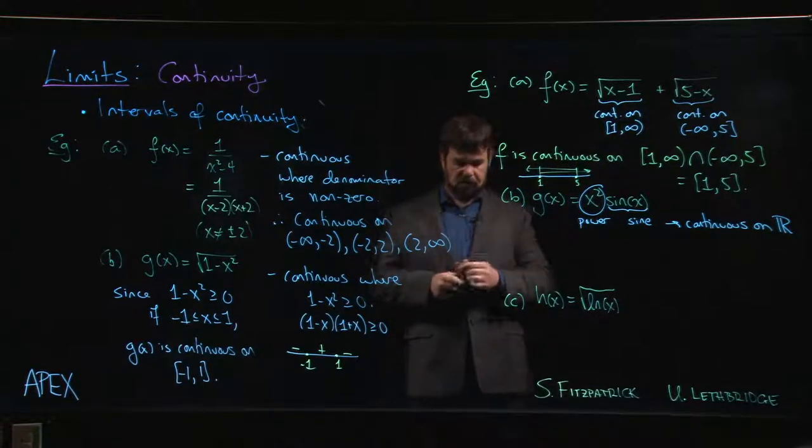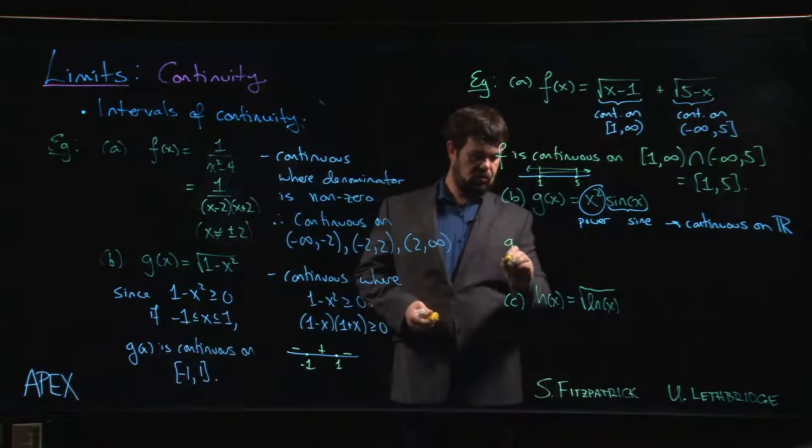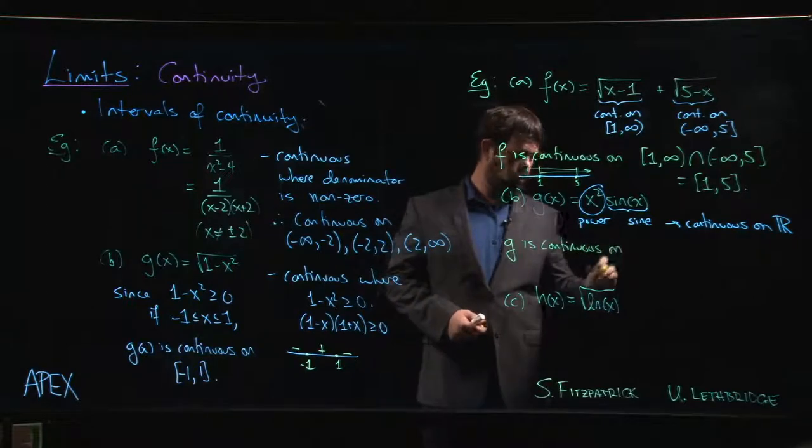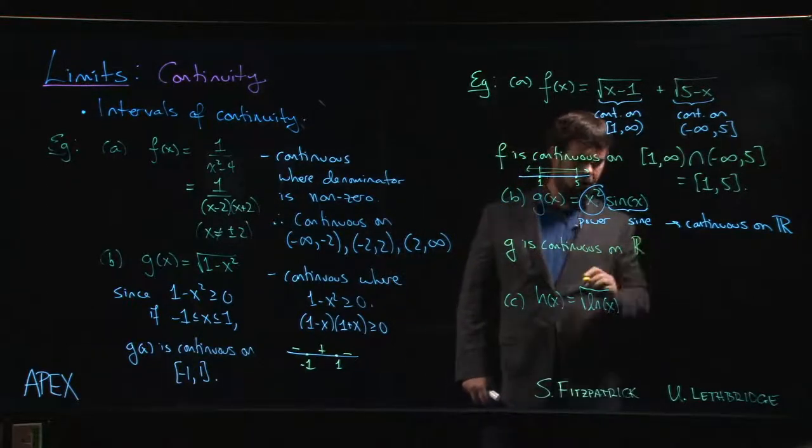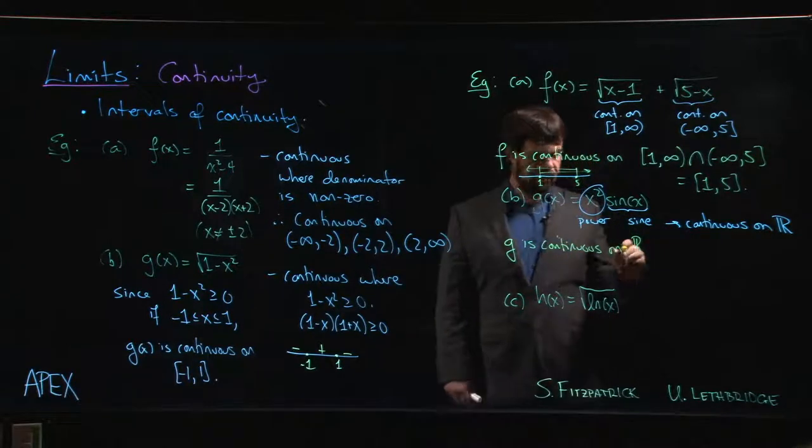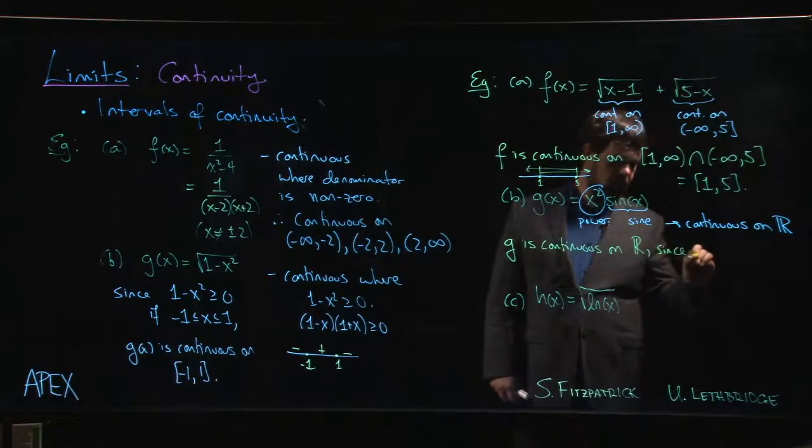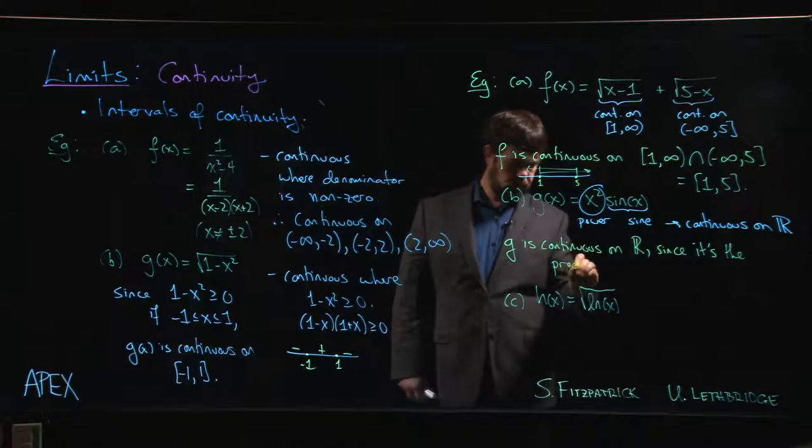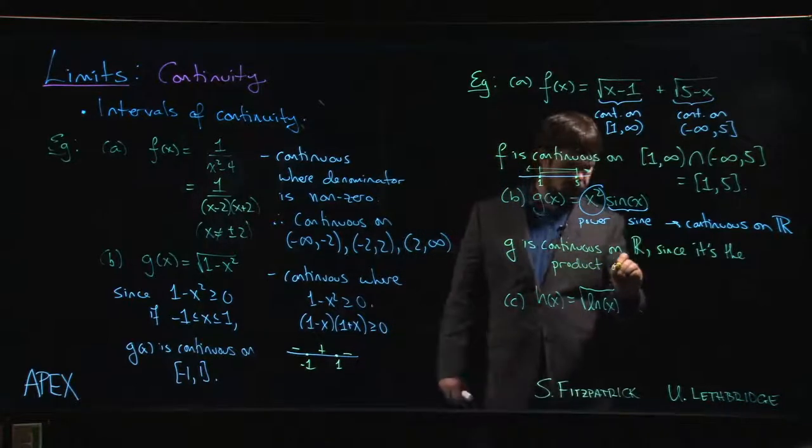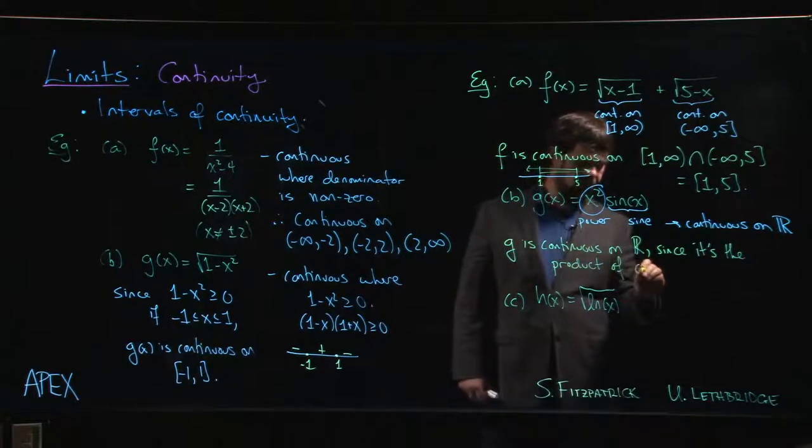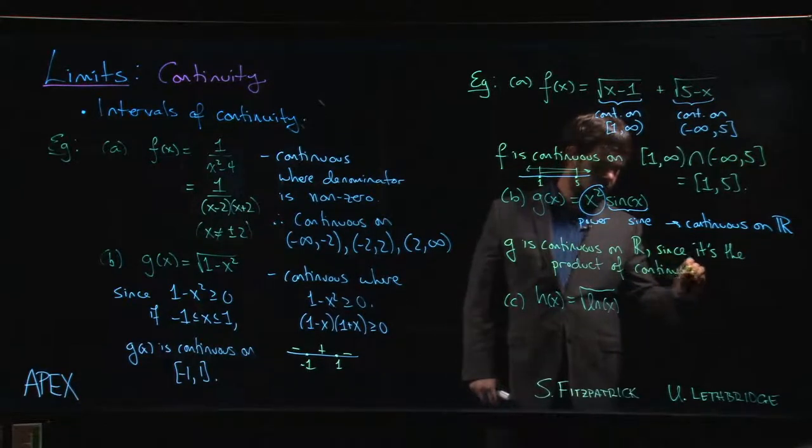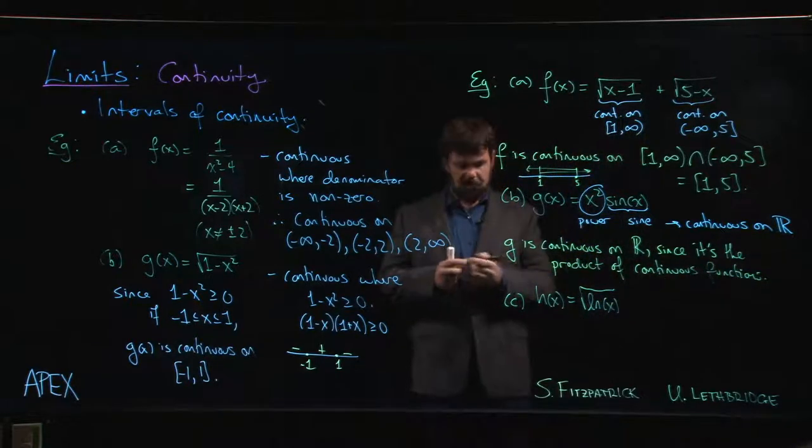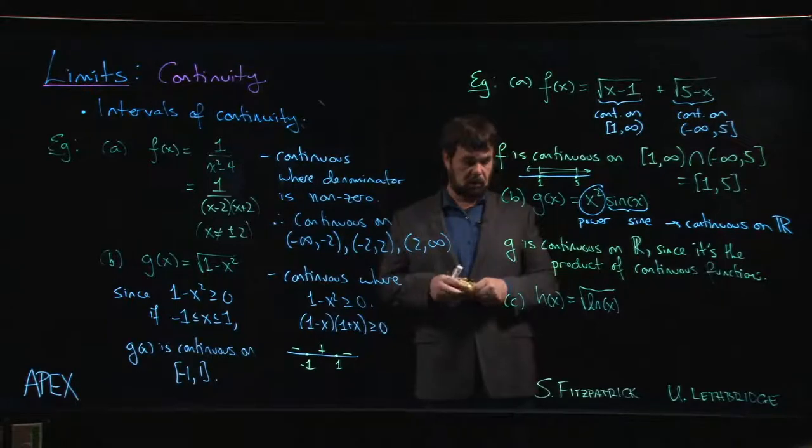So in this case we can say that g is continuous on R, or if you like minus infinity to infinity, and the reason is that it's the product of continuous functions. Or if we wanted to say more precisely it's the product of two functions which are also continuous on R.